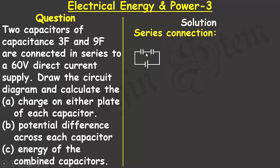The circuit diagram shows the standard symbols — this symbol represents the capacitor in a circuit diagram, while this one represents the potential difference. The capacitance of the first capacitor is 3 farad, the second is 9 farad, and the potential difference across the DC supply is 60 volts.